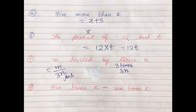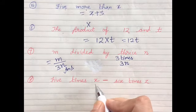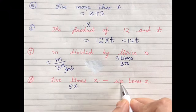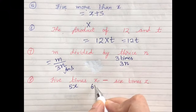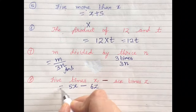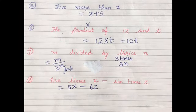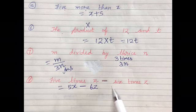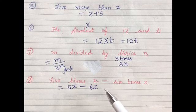And the last one we have 5 times X, that means 5X, 6 times Z means 6Z, and in the between you have minus sign. So simple, whatever is written you have to write that expression only. So this will be 5 times X minus 6 times Z, which is 5X minus 6Z.